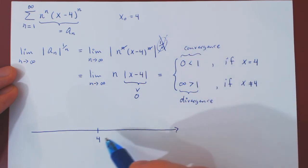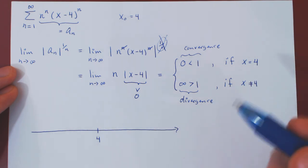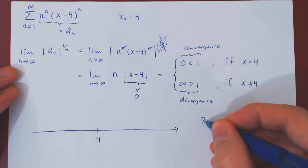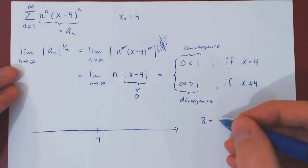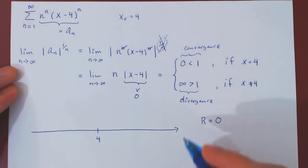As the series only converges at its center, well, we can't walk any distance, because as soon as we walk a little bit away from the center, we have divergence. So here, we cannot walk away from the center of the series and have convergence by any small amount, and so we have a radius of convergence that is equal to zero.